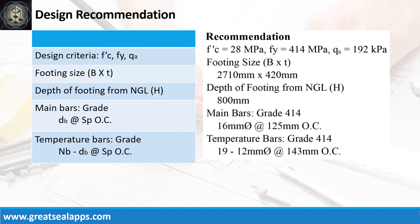Design recommendations are as follows: f'c equals 28 MPa; fy equals 414 MPa; qa equals 192 kPa; footing size is 2710 mm by 420 mm; depth of footing from natural grade line 800 mm; main bars grade 414, 16 mm bar at 125 mm on center; temperature bars grade 414, 19 pieces of 12 mm bar at 143 mm on center.